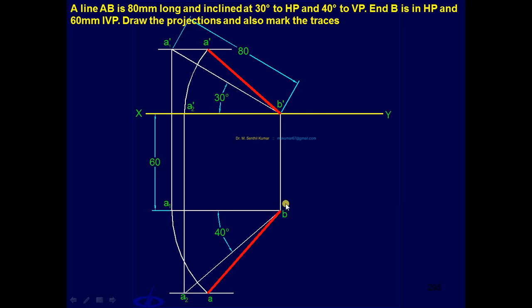As the final check, draw a projector through A'. It must pass through A. So the projection part is over. Now we will see about the trace part.